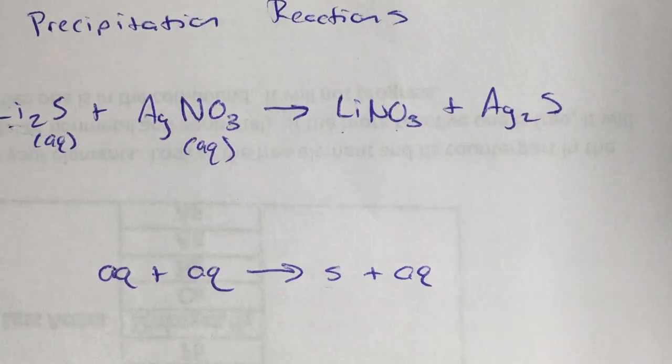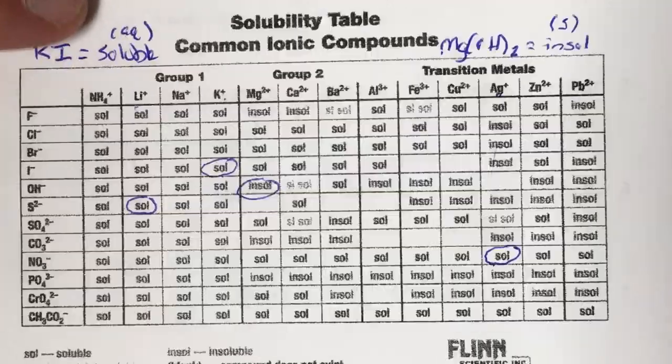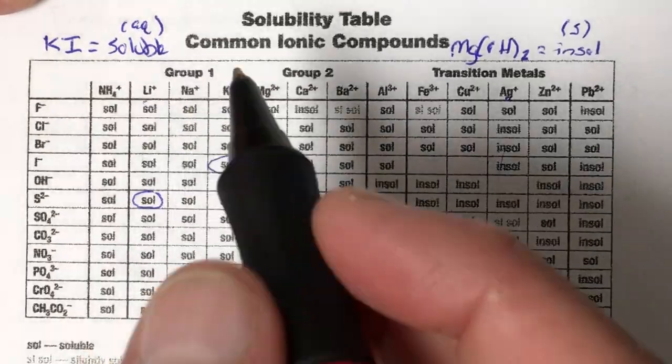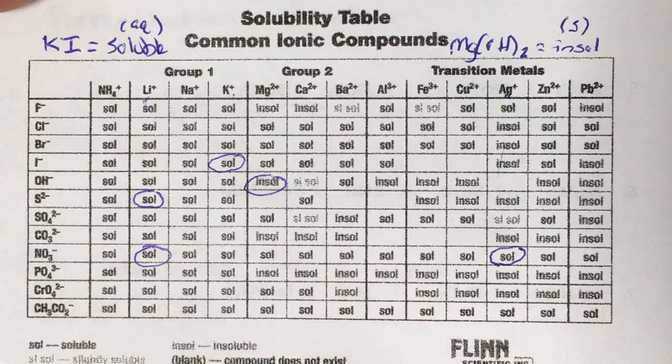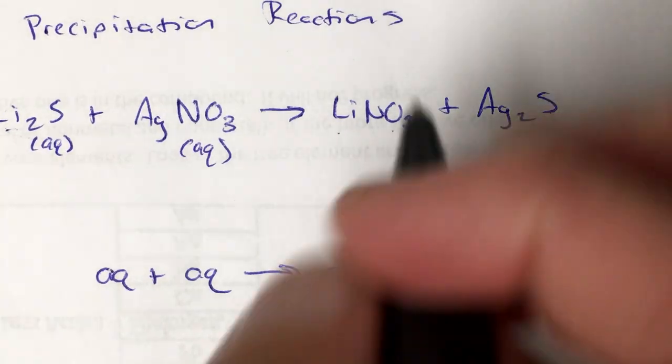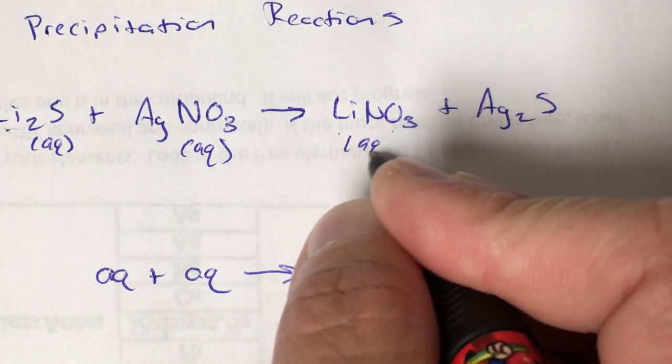Now back to lithium. Lithium and nitrate this time. So again, we go back to our table. Soluble. There's lithium. Come down to the nitrate. Soluble. AQ.